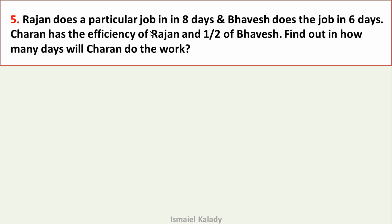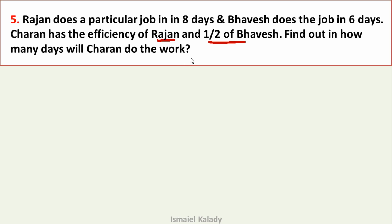Fifth question: Rajan does a particular job in 8 days and Bhavesh does the job in 6 days. Charan has the efficiency of Rajan and half the efficiency of Bhavesh. Find out in how many days will Charan do the work.